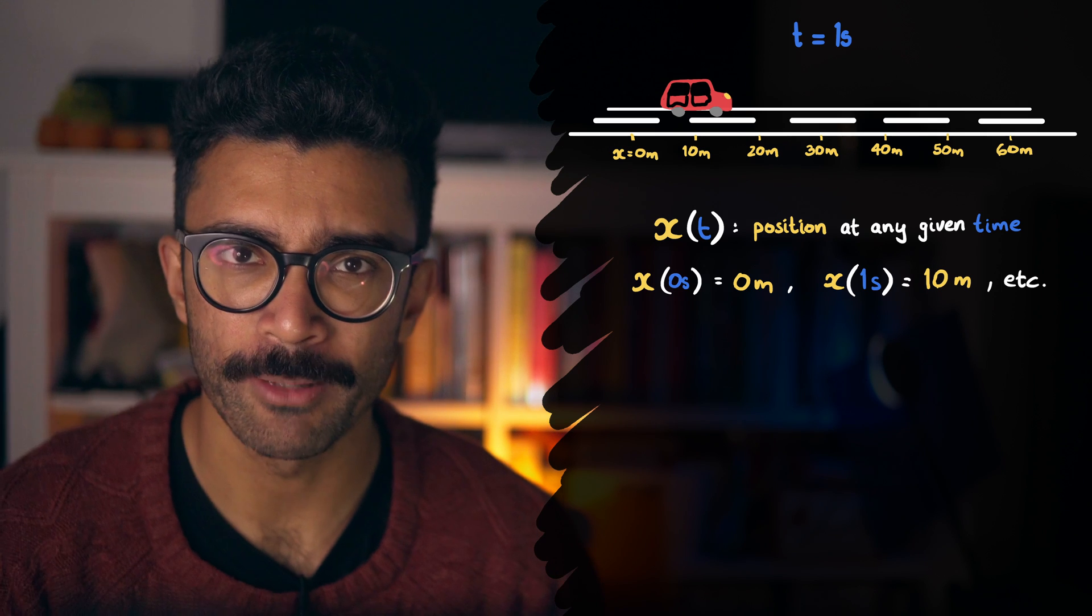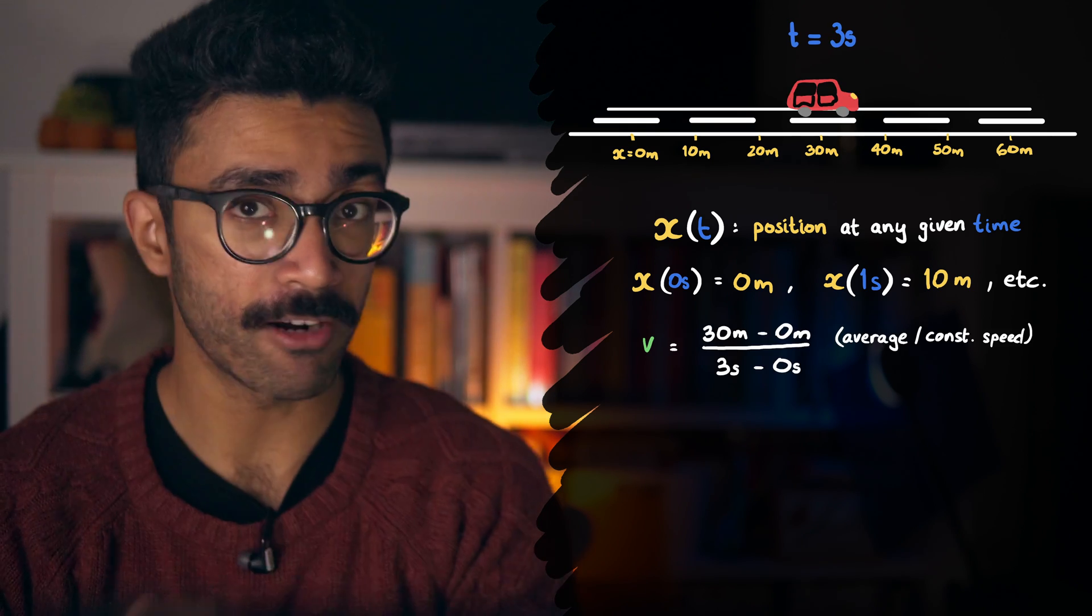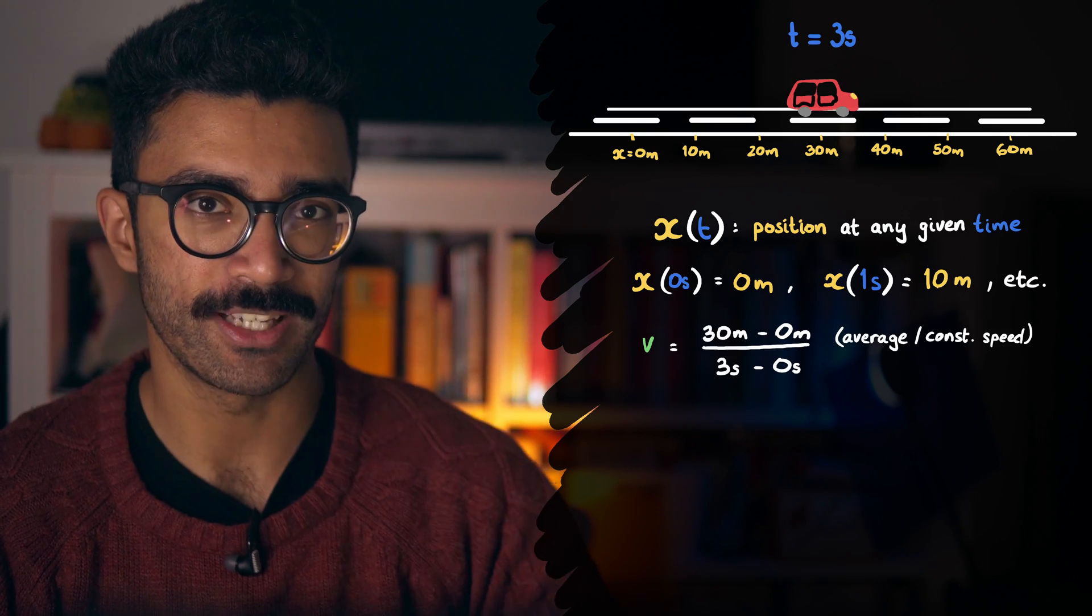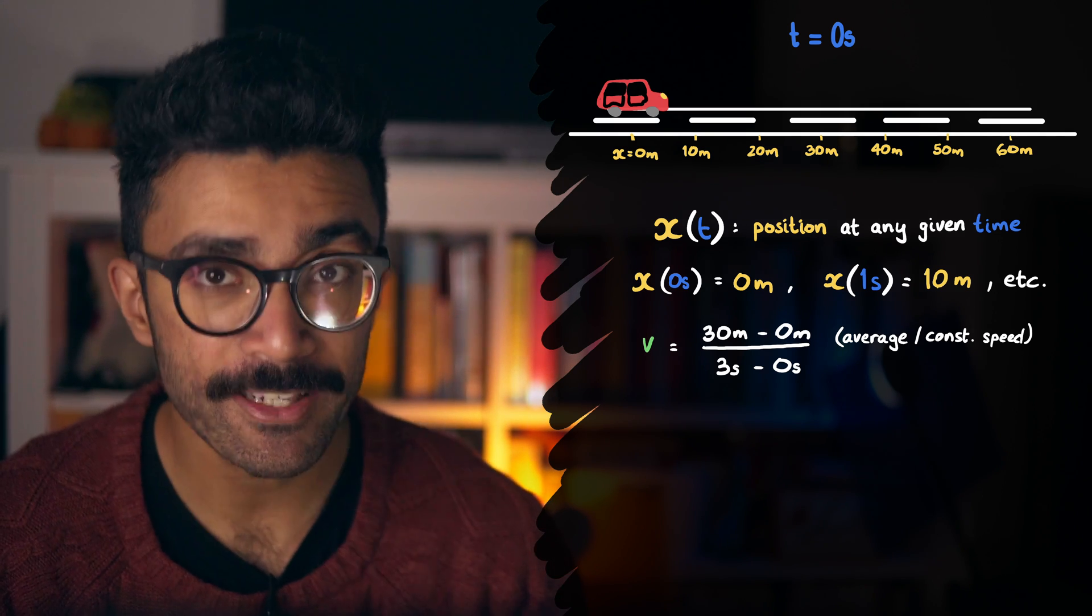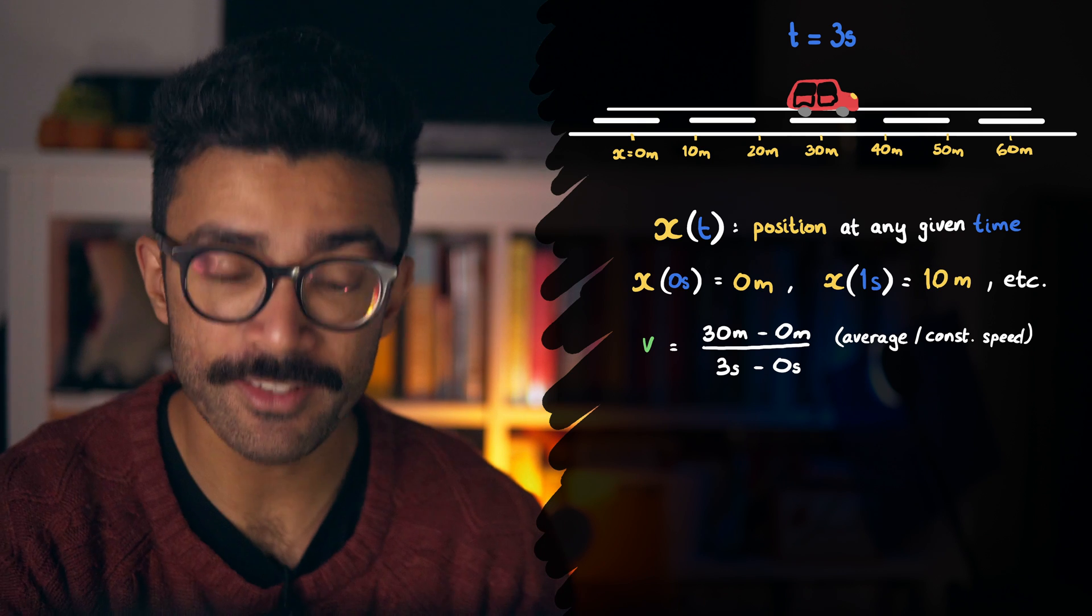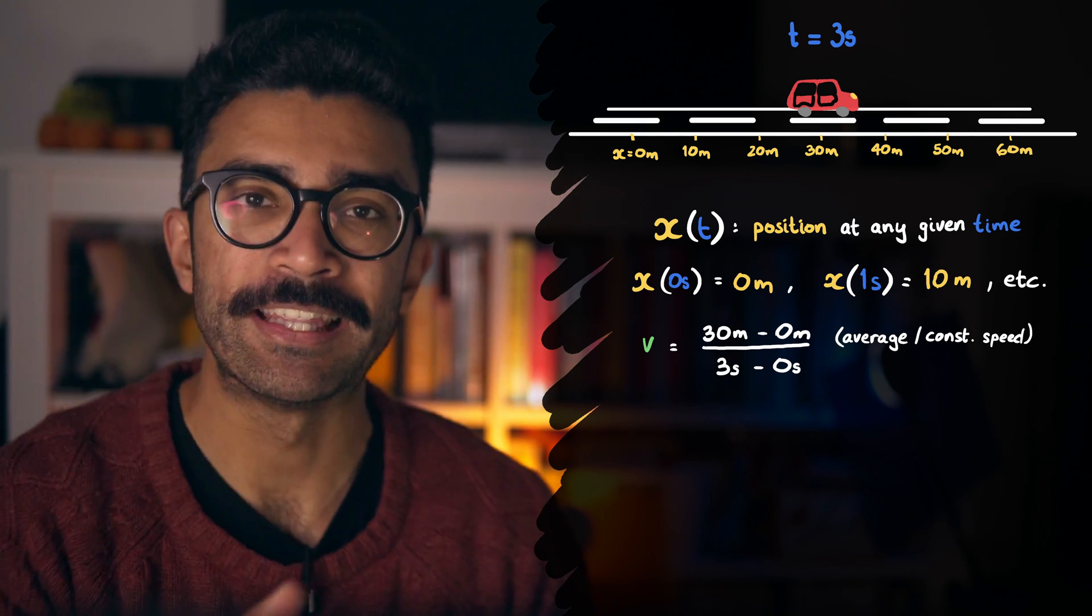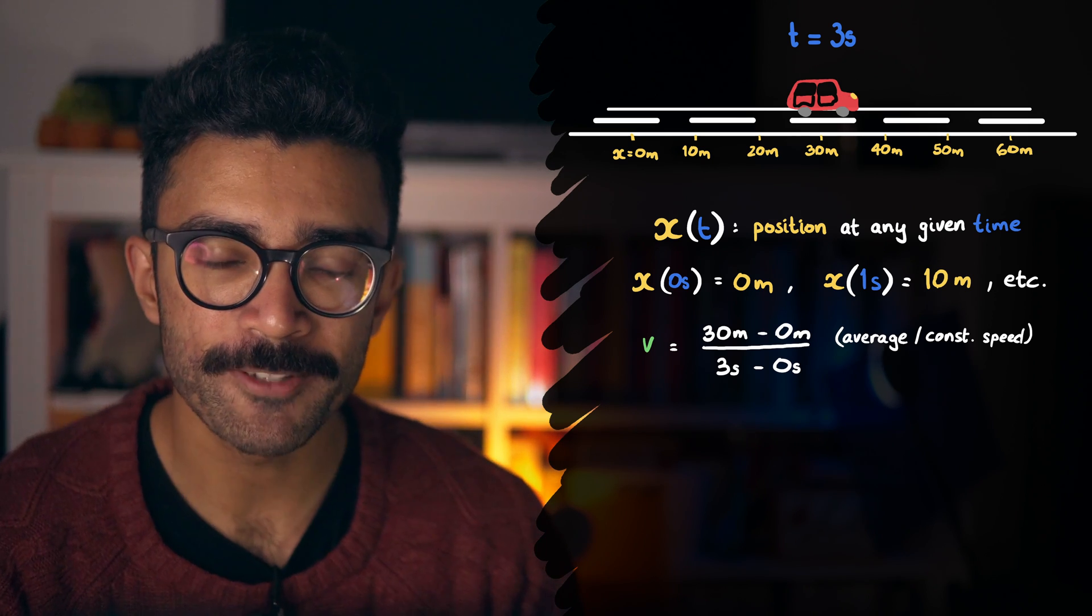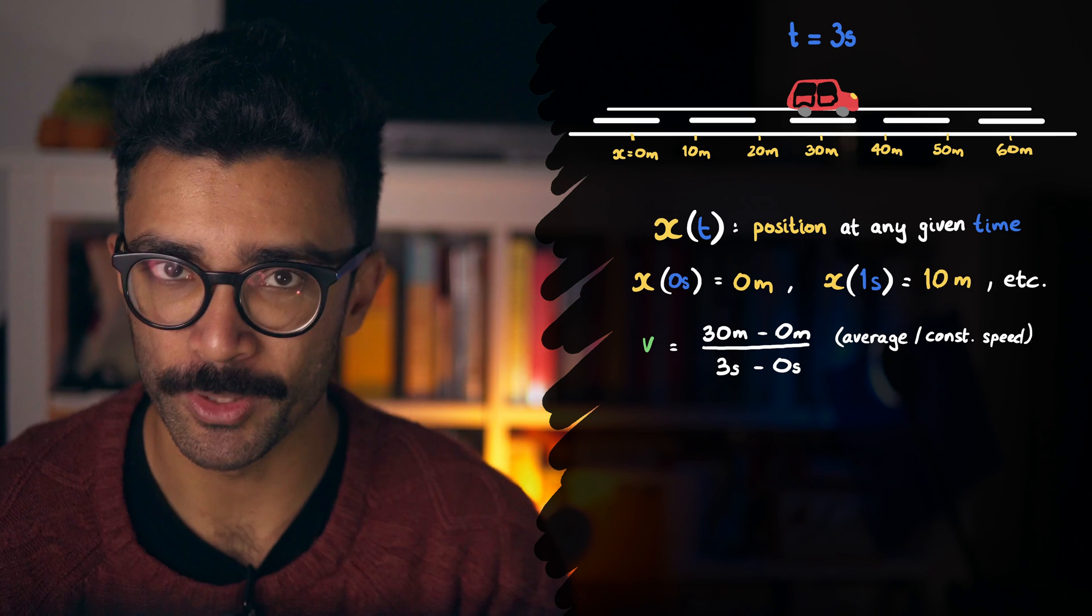But what about if we're talking about the speed of the car? Well, we know that an object's speed can be found by calculating its current position minus the position it was at some time ago, divided by the time it took to get from there to where it is now. In other words, the distance covered divided by the time taken to cover that distance. This is great, but of course it only works if the car is moving at a constant speed, or at the same speed all the time.